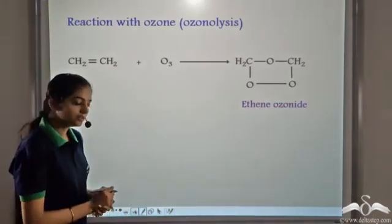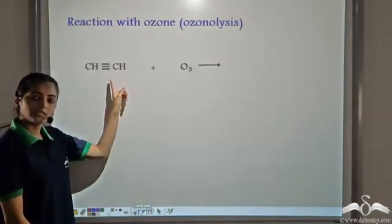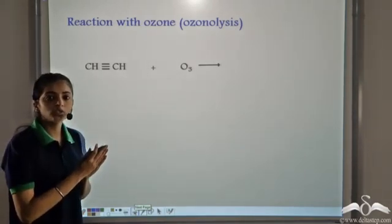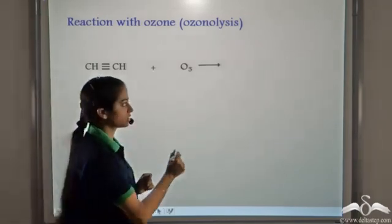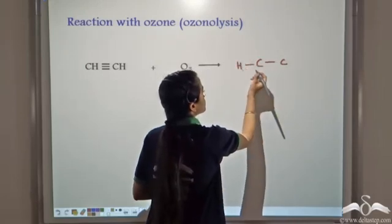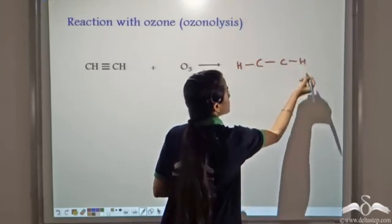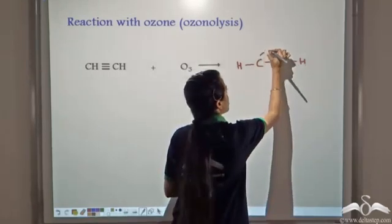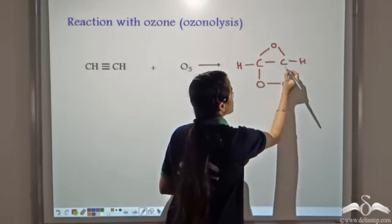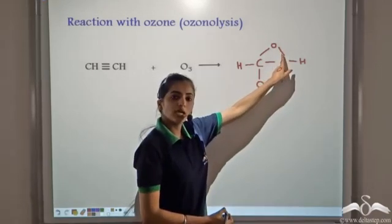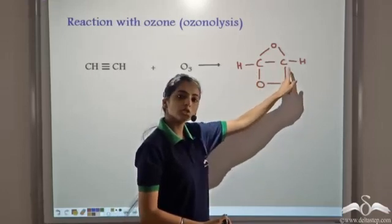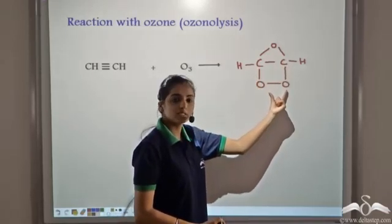Now let's take an alkyne. We use ethyne, which is now made to react with ozone. When alkynes react with ozone, they form a hut kind of structure. In this case, we have two carbon atoms. One oxygen atom bonds to the two carbon atoms, and the other two oxygen atoms attach to the two carbon atoms and form a bond between them as well.